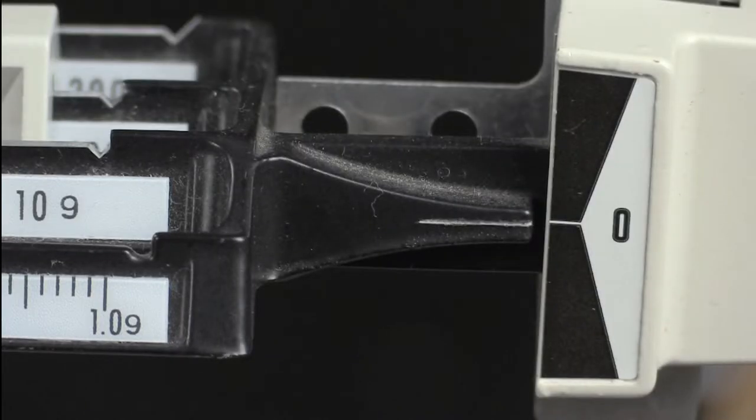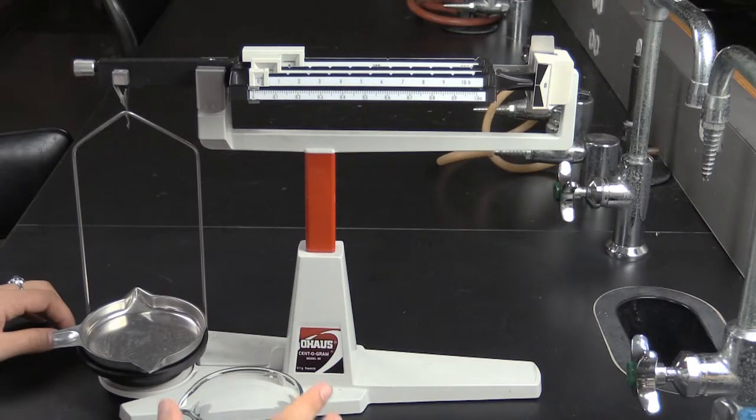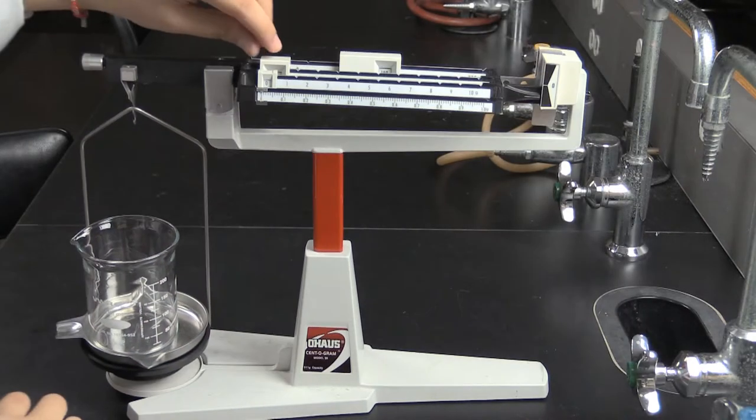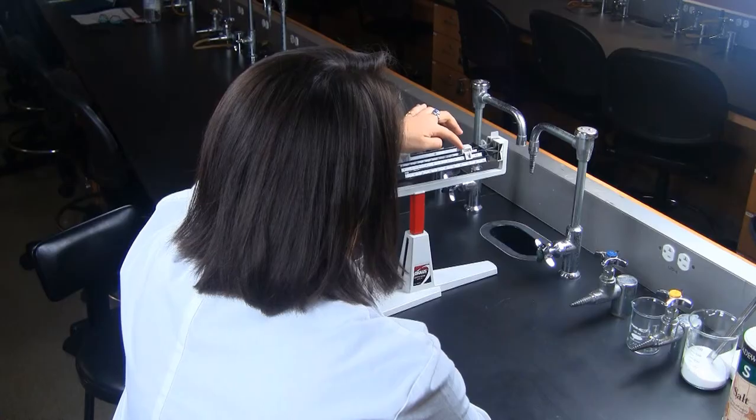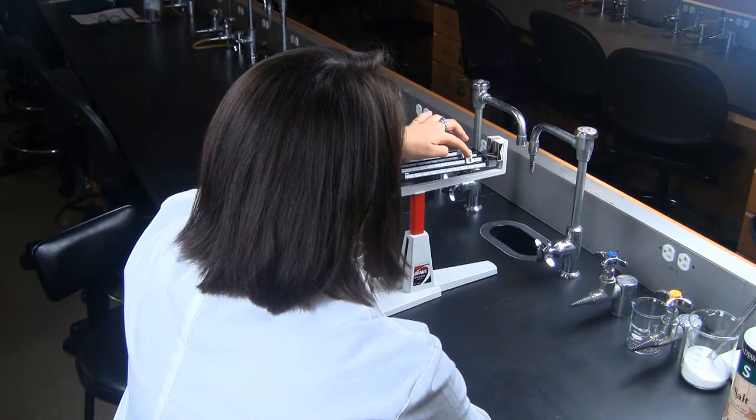Once the balance is zeroed, you are ready to take a measurement. Ileana is going to measure the mass of a beaker. When she places the beaker on the balance pan, it will go out of balance.